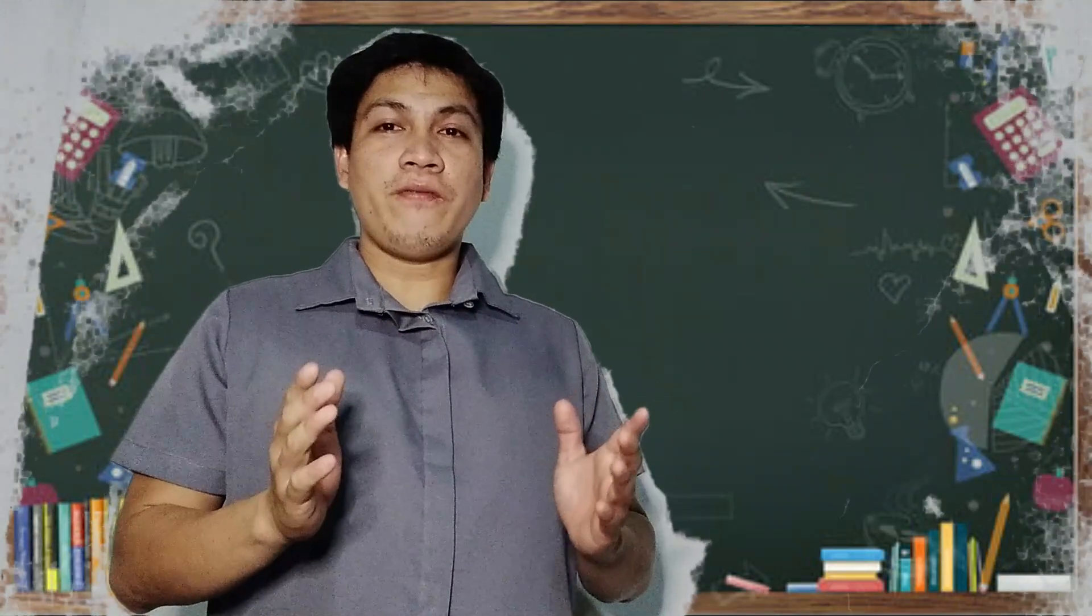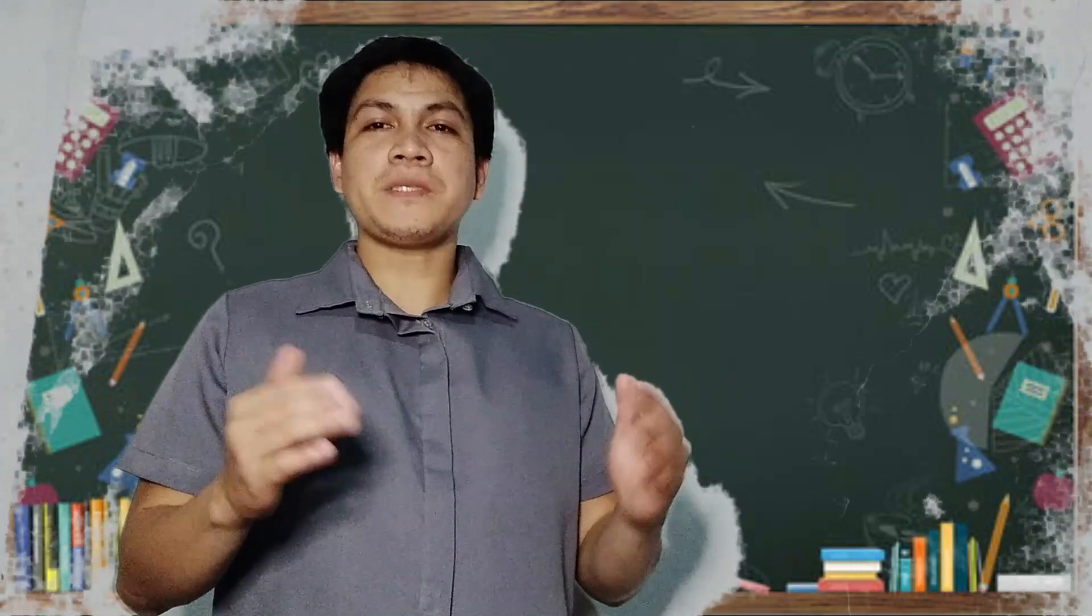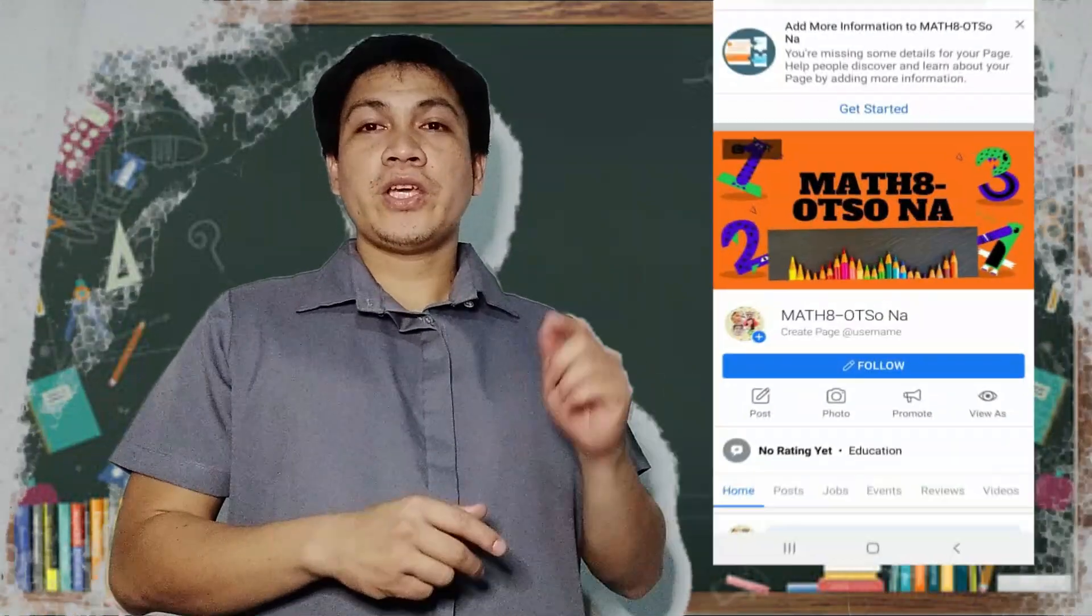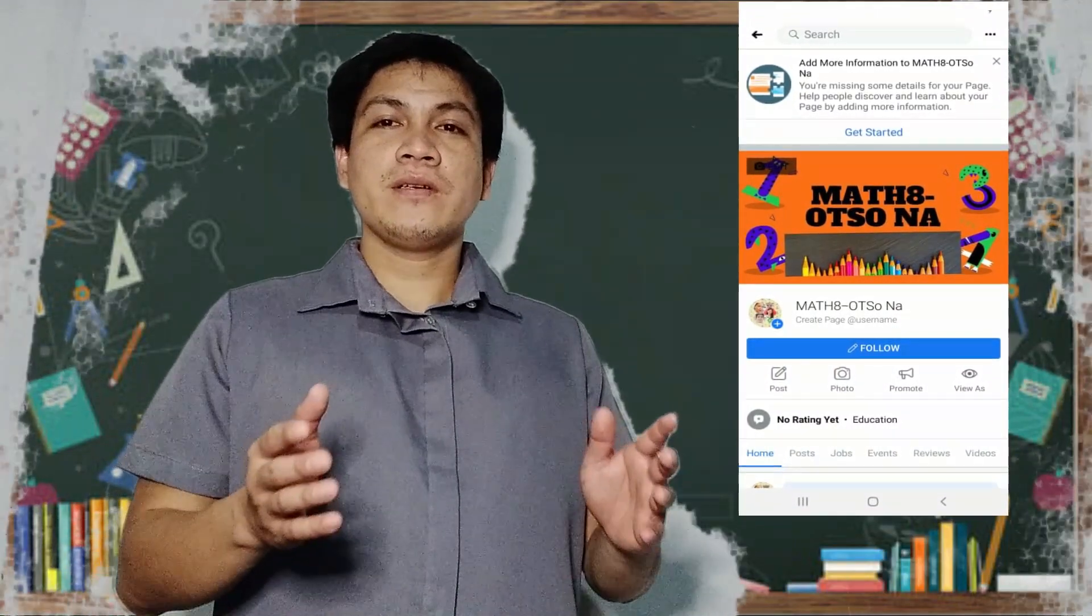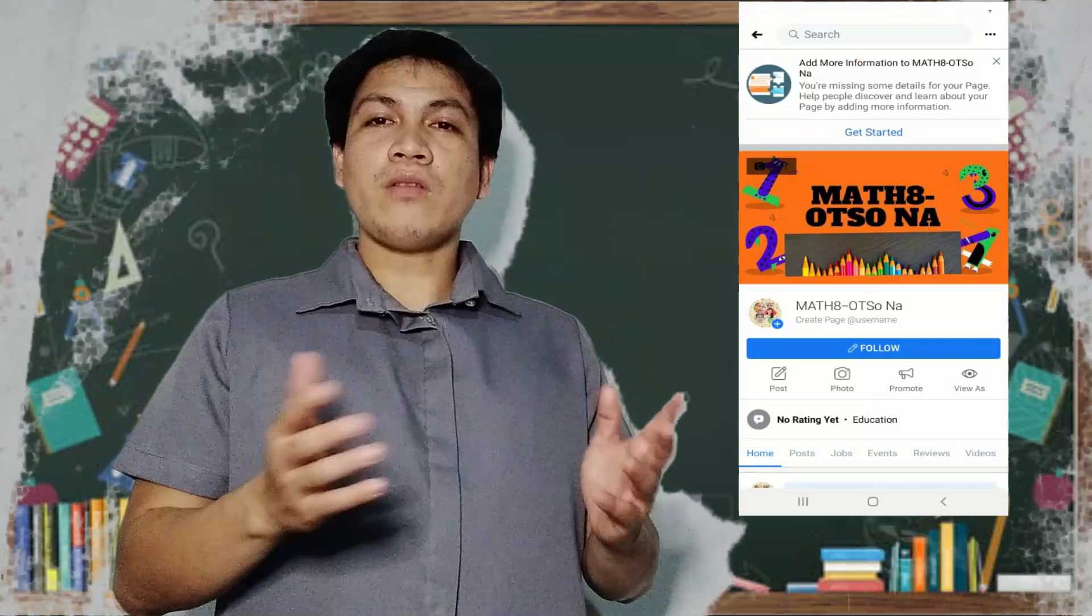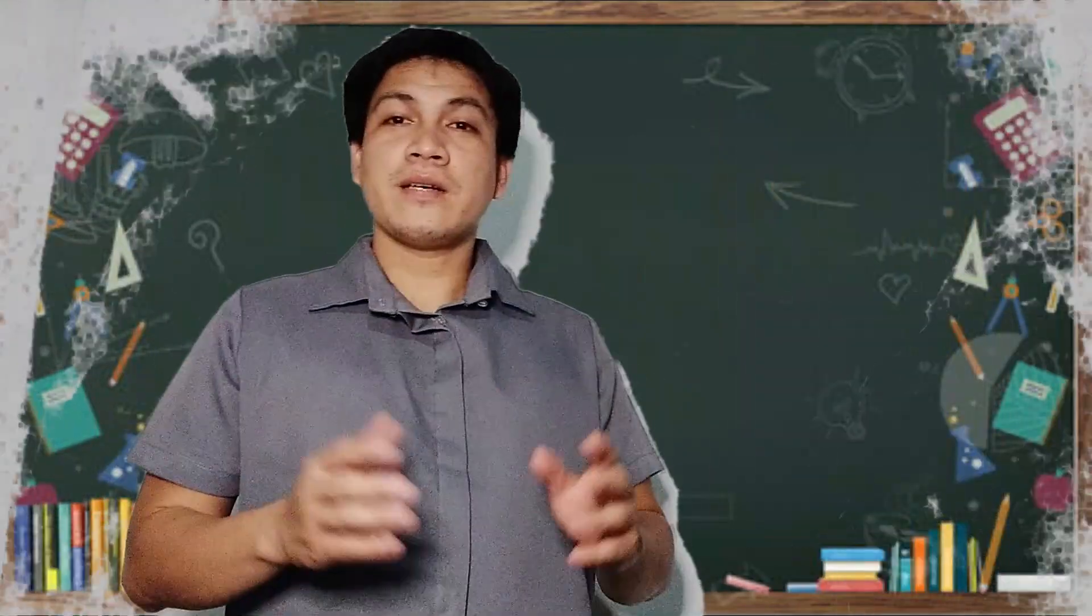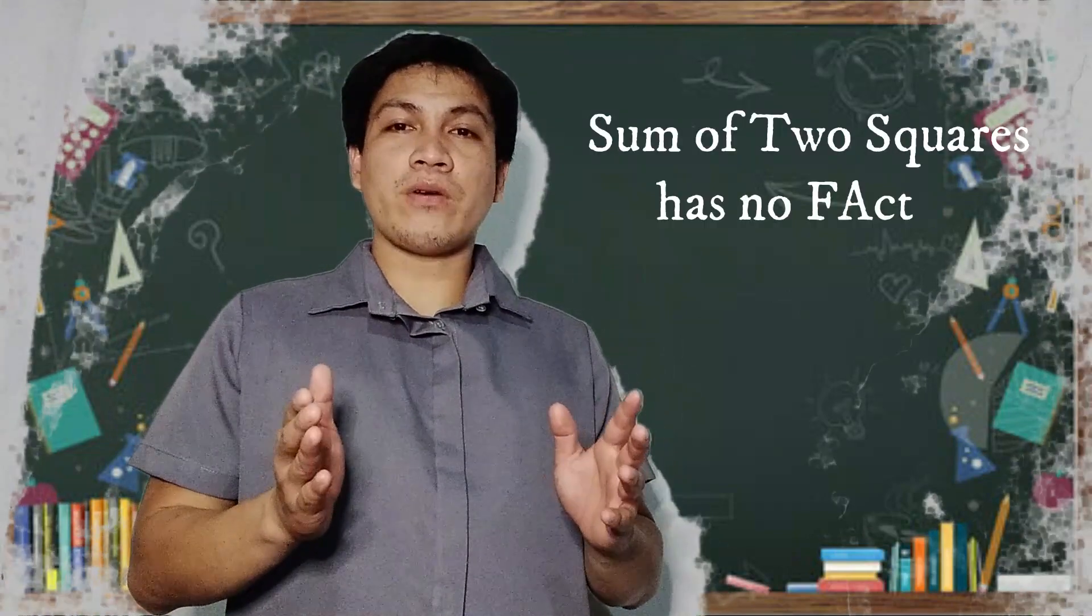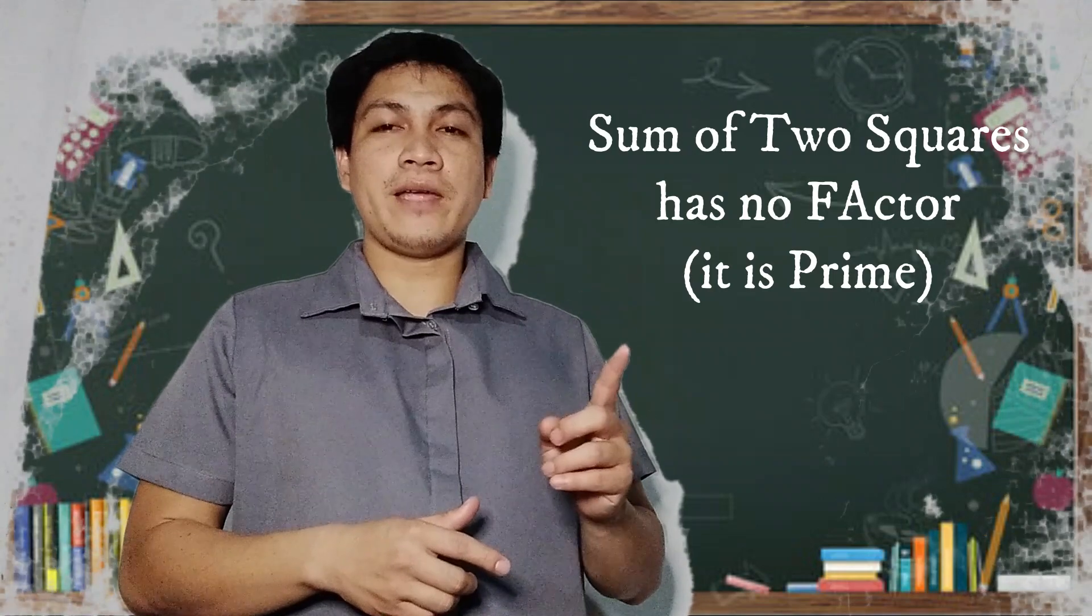Now, if you want to learn more about factoring those types of polynomials, you can visit our page MAT88. There are some tutorials on how to factor each type of polynomials. Remember, we do not have a factor for the sum of two squares. Because that is prime. Not factorable.